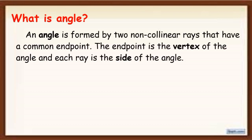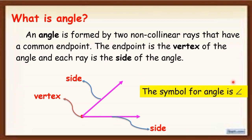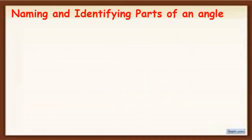The endpoint is the vertex of the angle, and each ray is the side of the angle. So the example of an angle is this one — this is what we call the vertex. Remember, the endpoint is the vertex of the angle, and this ray is what we call the side of the angle. The symbol of the angle is this one.